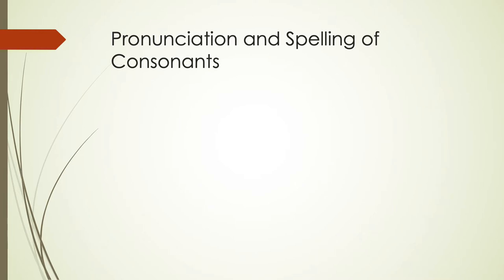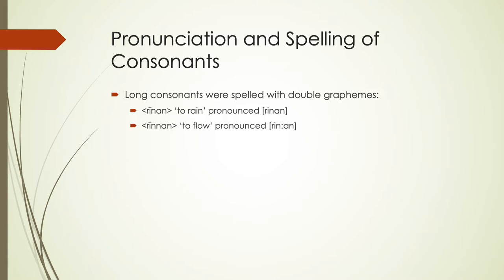There were long consonants as well as long vowels in the Old English time period. The long consonants were usually written just with two of the letters. So 'to rain' (rinan) would be spelled with one N, but 'to flow' (rinnan) would be spelled with two Ns. Most of the time, when there's a long consonant, they write out both of those consonants together to show that it's longer.